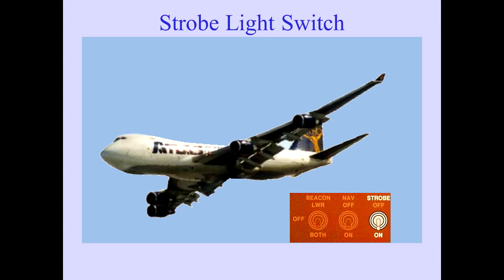The strobe light switch controls three white anti-collision strobe lights. One strobe is installed on each wing leading edge at the base of the winglet and one in the tail cone.